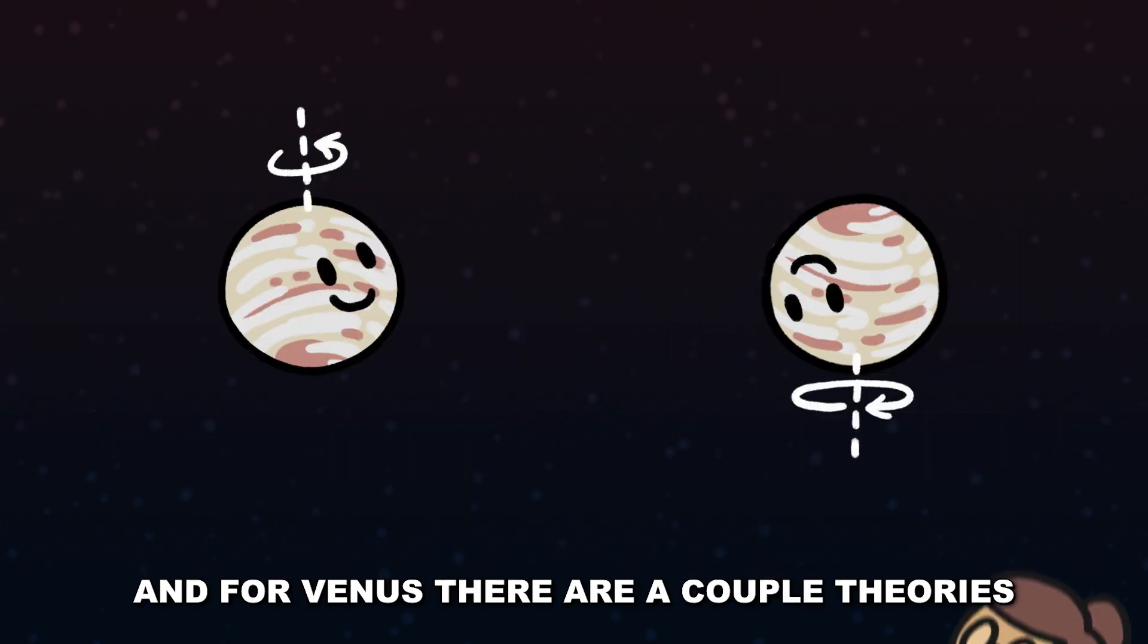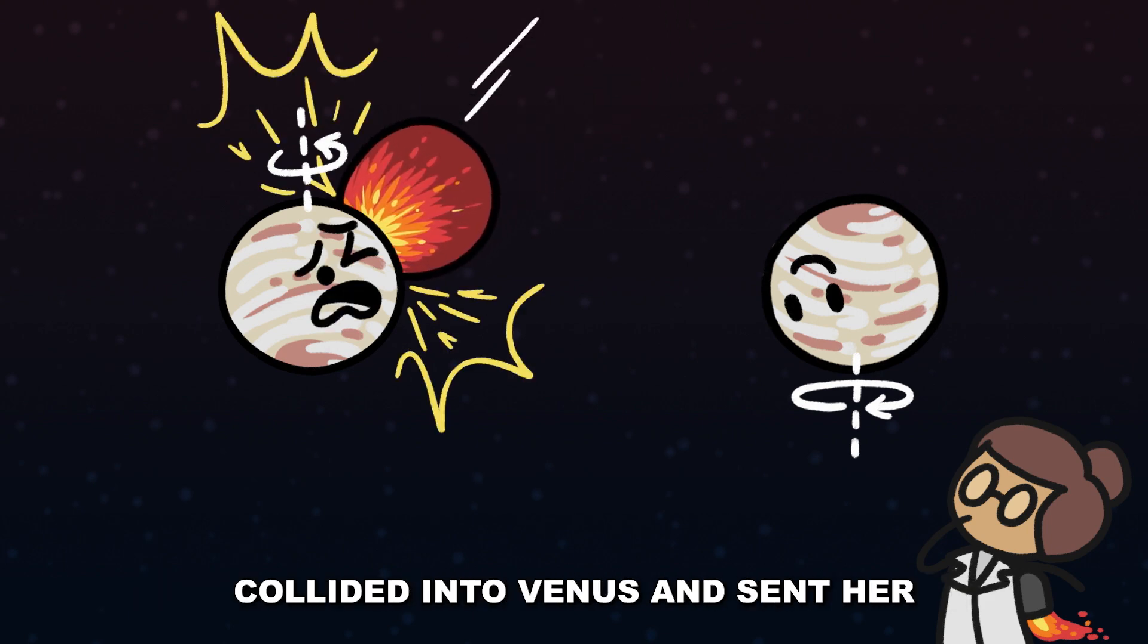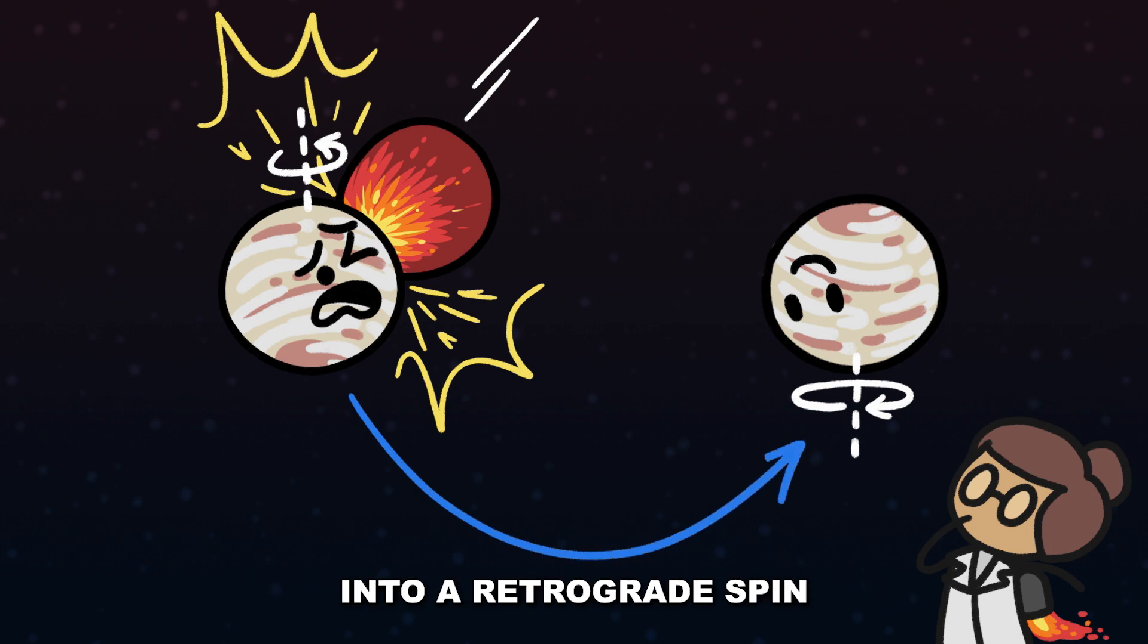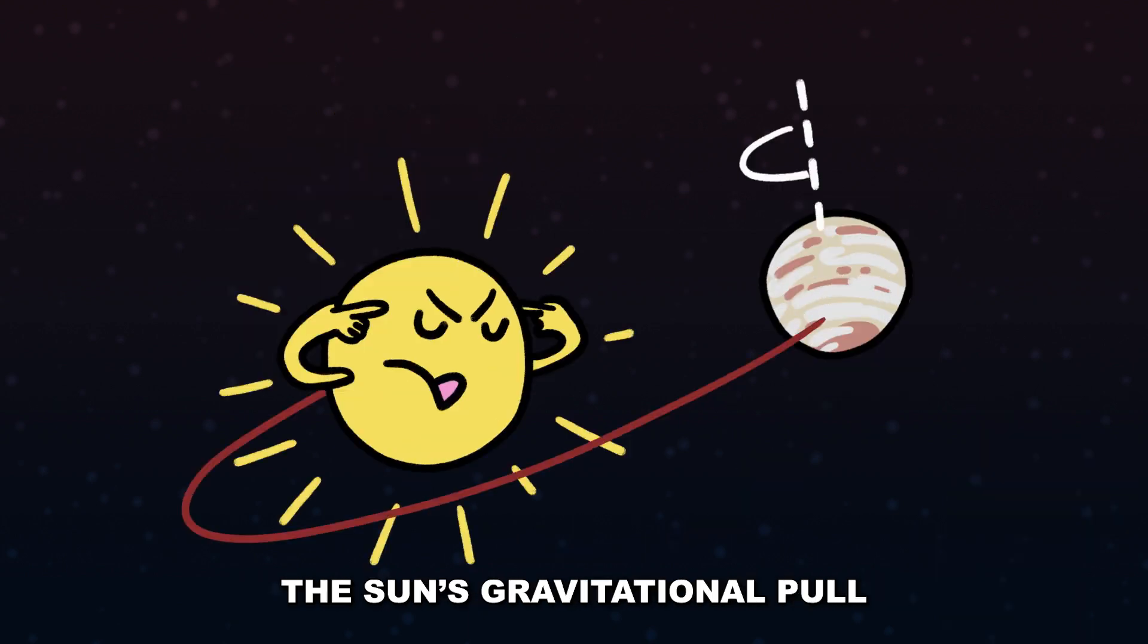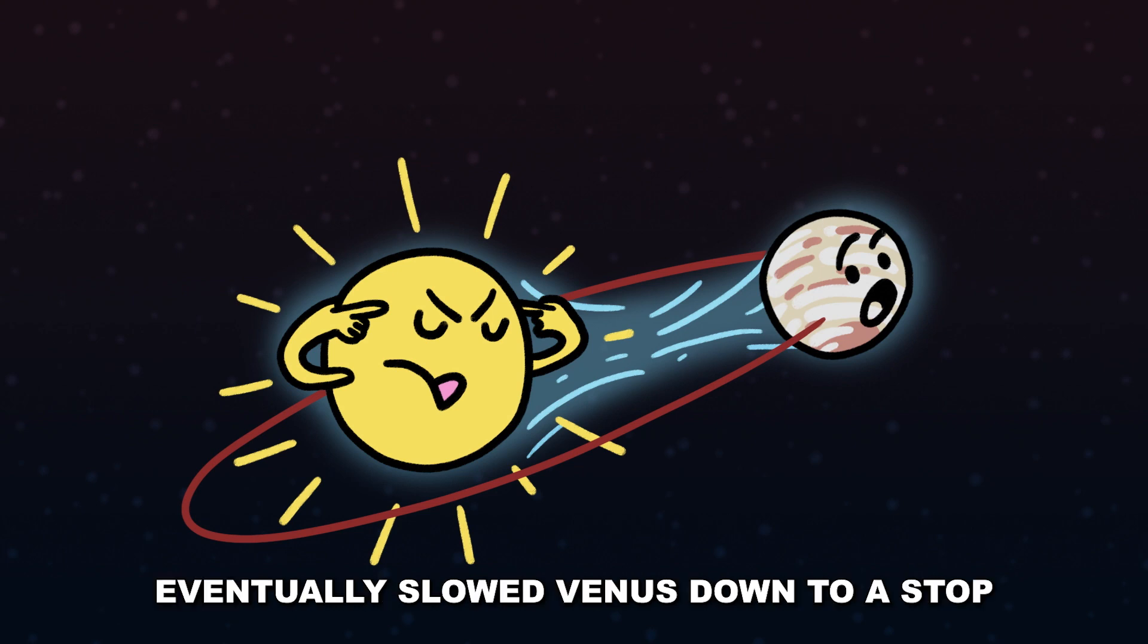And for Venus, there are a couple of theories. The first idea is that a massive object, like maybe another planet, collided into Venus and sent her into a retrograde spin. The other theory is that the Sun's gravitational pull on Venus's dense atmosphere eventually slowed Venus down to a stop.